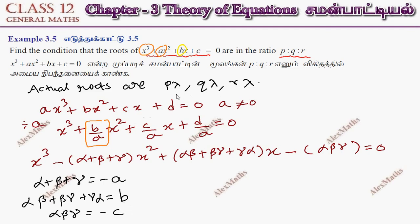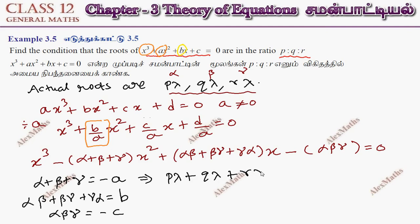Now since the roots are in ratio p:q:r, we substitute α = p·lambda, β = q·lambda, γ = r·lambda. So the first equation becomes: (p + q + r)·lambda = −b/a.